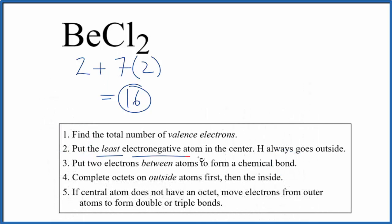Next we'll put the least electronegative atom at the center of our Lewis structure, that's the beryllium. We'll put chlorines on either side.